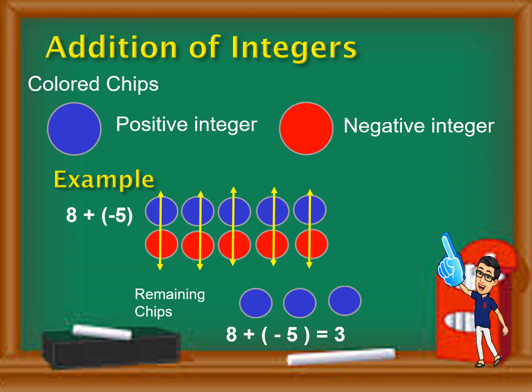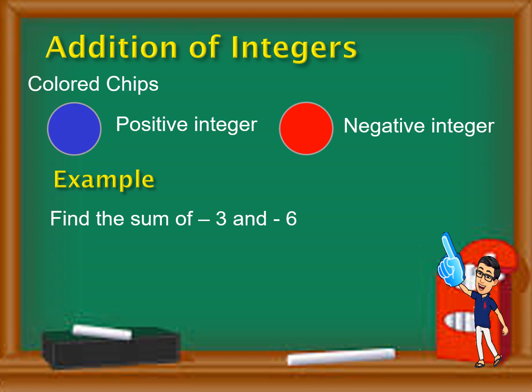The examples given are examples of unlike signs — that is, the signs are different. Now let us proceed with adding integers with like signs, meaning both chips will be the same color — both blue or both red.